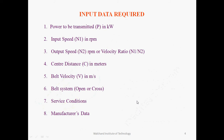To satisfy this objective, the input data required is: power to be transmitted P in kilowatts, input speed n1 in rpm (driver speed), output speed n2 (driven pulley speed). Sometimes we use the velocity ratio n1/n2 to decide upon the diameter and center distance in meters. The belt velocity v in meters per second normally refers to certain standard values from the point of view of economy and life of the belt, as suggested by the manufacturer.